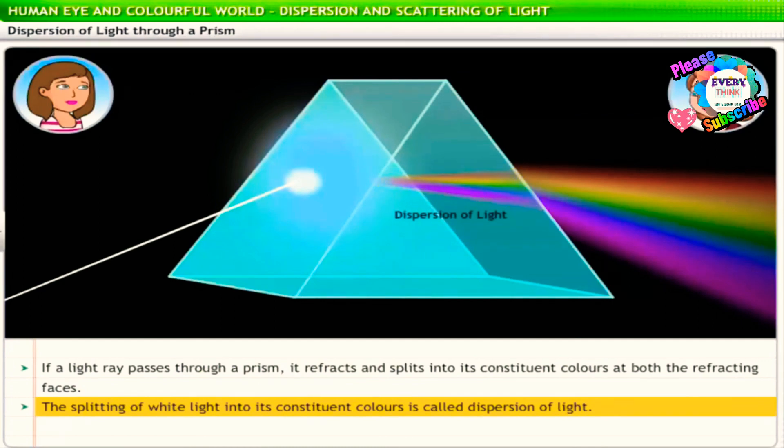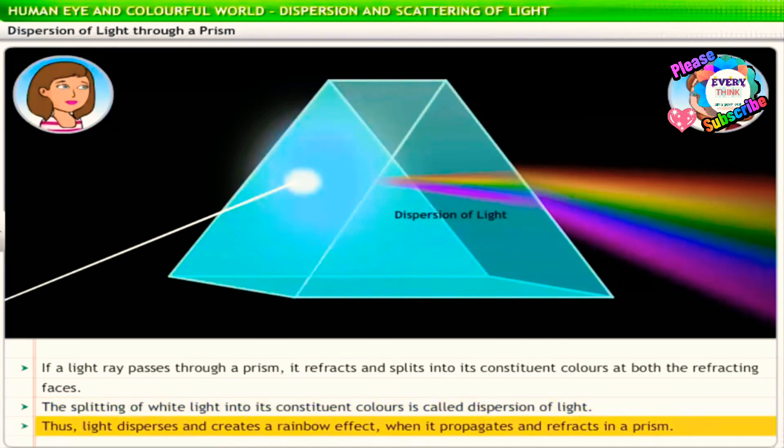This is how you get the rainbow effect through the prism as well. Light disperses and creates a rainbow effect when it propagates and refracts in a prism.